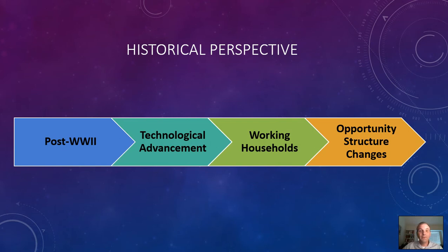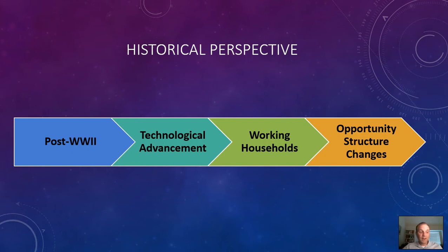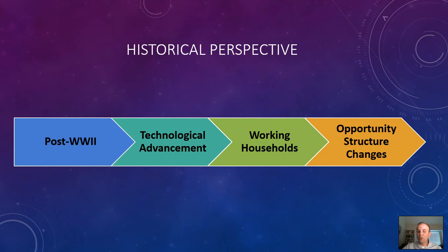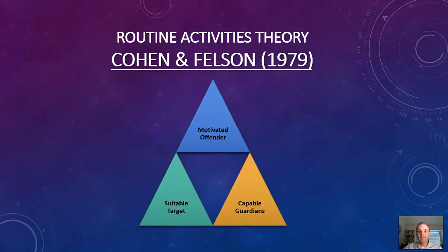The historical perspective leading up to routine activities theory — developed by Cohen and Felson in 1979 — is rooted in the post-World War II era when the economy and technology were advancing. People were getting back to work, and the opportunity structure was changing. Plastics were advancing; televisions, telephones, and refrigerators were becoming normal household items. Things were becoming more compact, easier to lift and carry, and of high value, which increased opportunities for criminal acts and victimization.